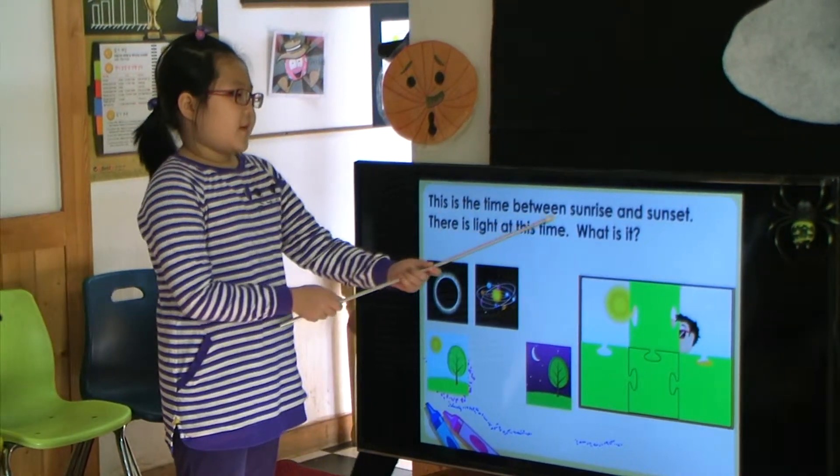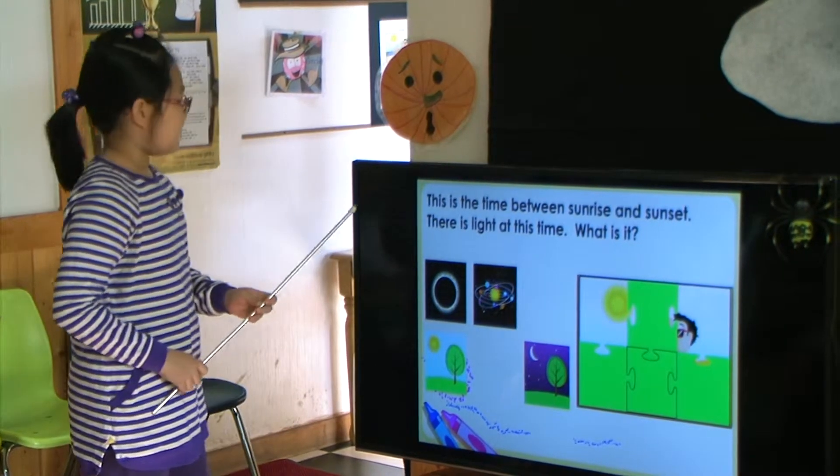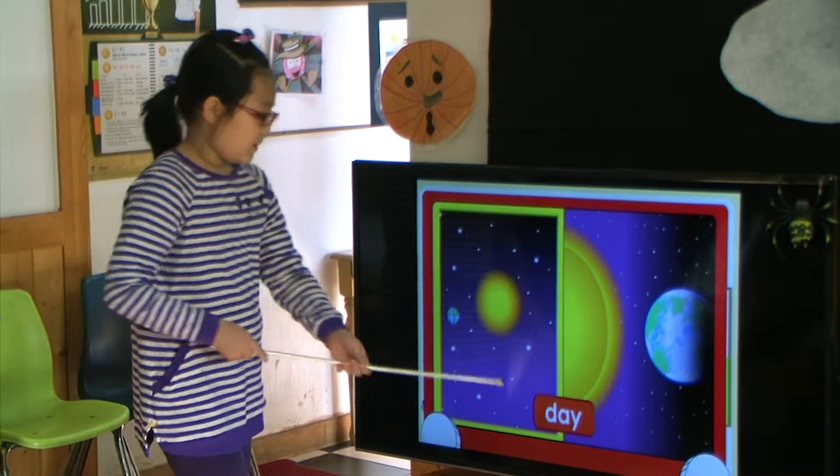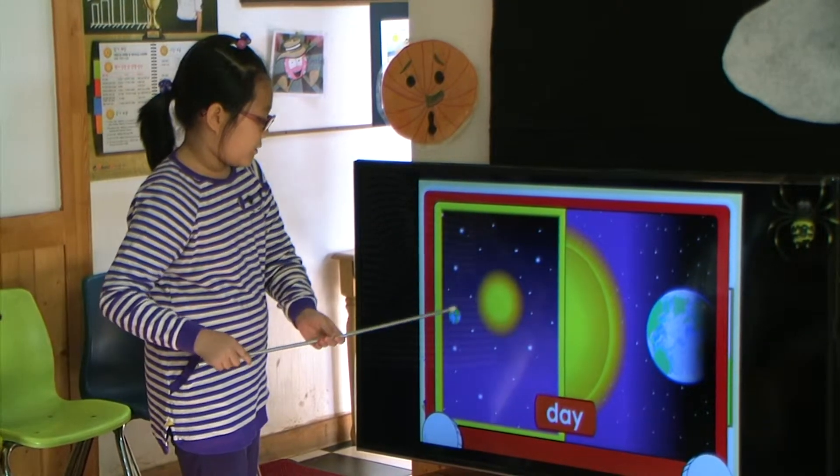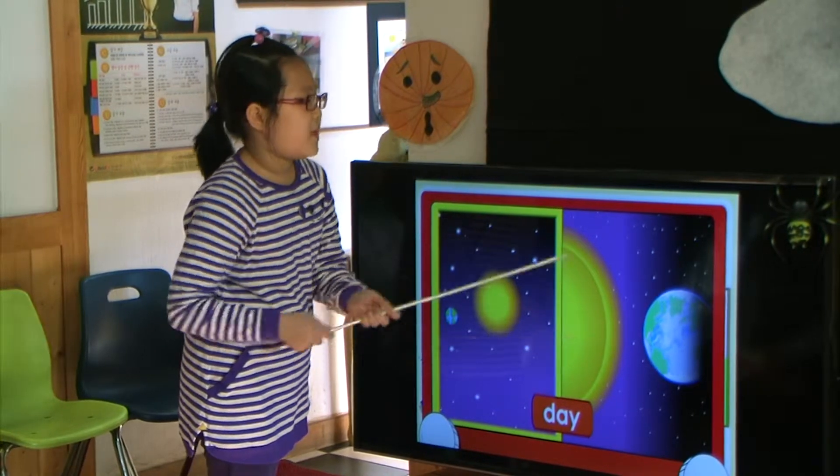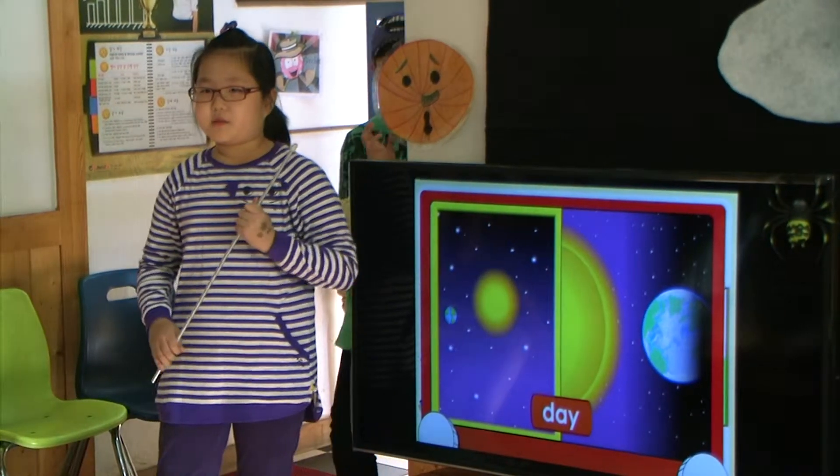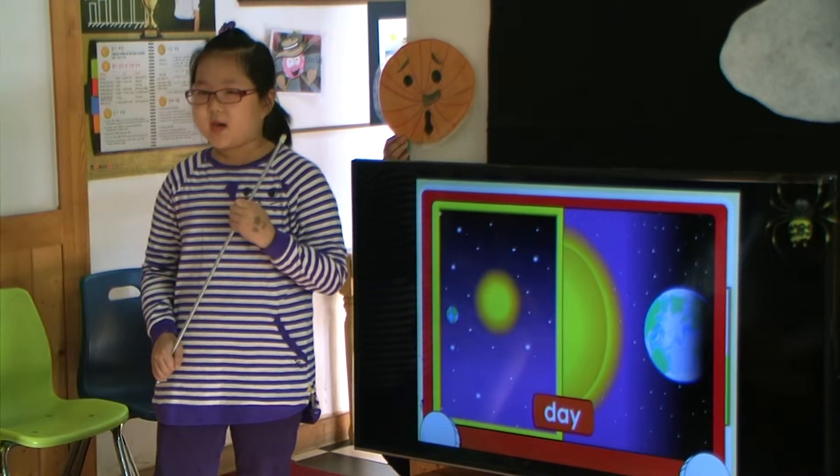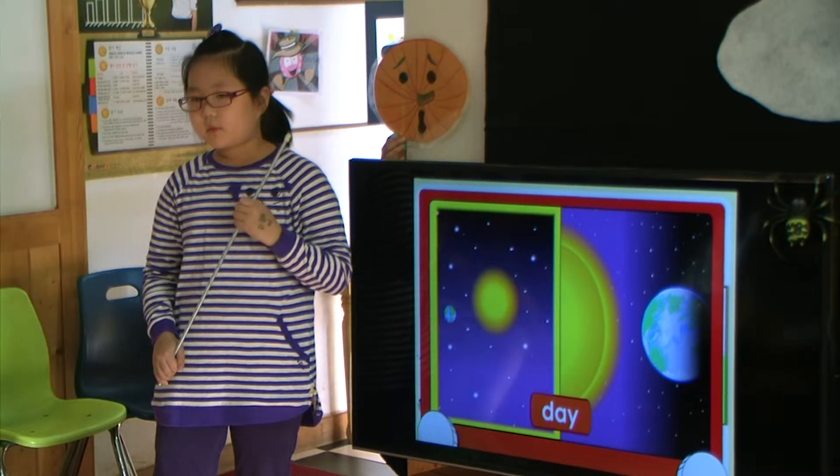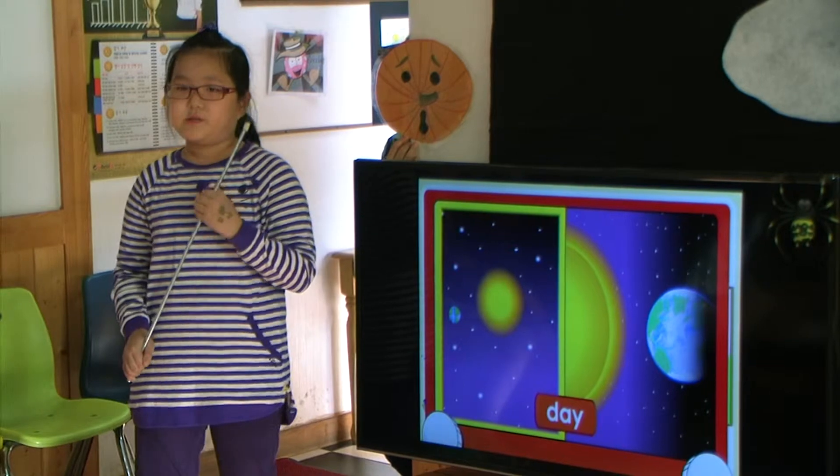This is the time when there is light at sunrise and sunset. There is light at this time. What is it? Day. The earth spins wherever it faces the sun. While earth is spinning, only one part faces the sun. When the part of earth turns toward the sun, it is day. Because the earth spins, the sun seems to move during the day. It moves across the sky from east to west, as it does the same for other parts of earth.